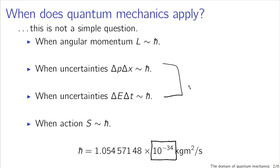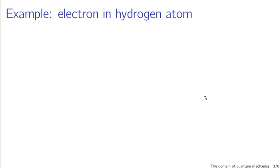In practice the uncertainty relations are the most useful criteria, while the action is the most fundamental, but we're more interested in useful things. For example, consider the electron in the hydrogen atom. From looking at the bright line spectra you know this should be in the domain of quantum mechanics, but how can we tell quantitatively?